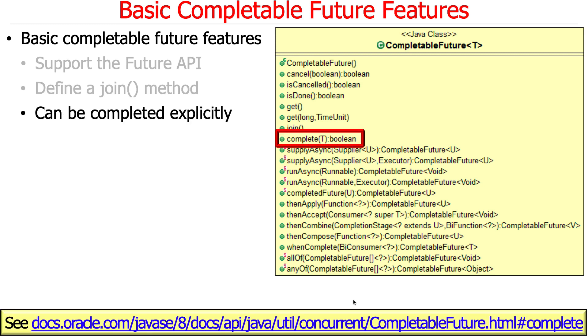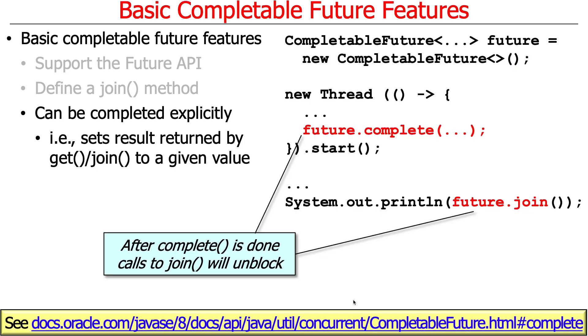One other thing you can do with the simple parts of completable futures is use something called a completion method. You can explicitly complete a future. There's a method called complete where you give it the return result or the result of the future computation. The typical reason for doing this is to write code where you want to do some asynchronous computation, and when that asynchronous computation is done, you want to explicitly tell the future, here is your final result. I'll show you some more examples that make this a little bit more clear shortly.